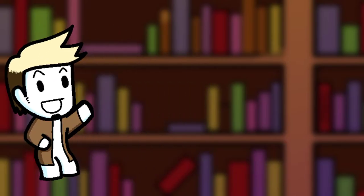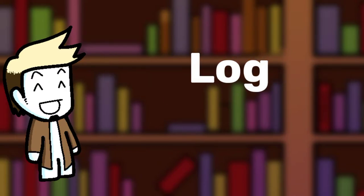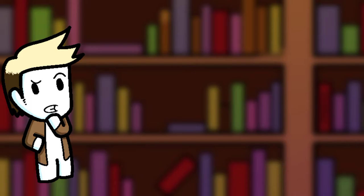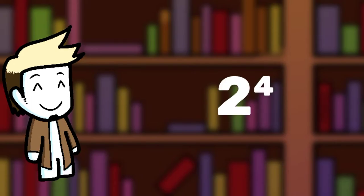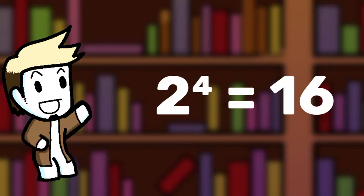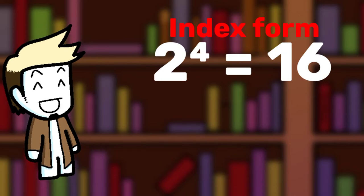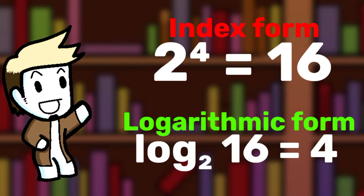Side note: we can shorten logarithms to just log. So, how do indices relate to log? Let's take the previous equation: 2 to the power of 4 equals 16. This equation is currently being written in the index form. But it can also be written in the logarithmic form: log base 2 of 16 equals 4.